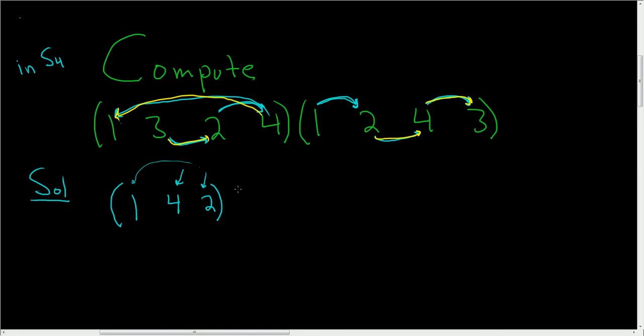And now the only number left is 3, so 3. 3 goes to 1, but then 1 goes back to 3, so 3 goes to 3. So this one's fixed, so we can actually omit this from our answer. This is 1, 4, 2, and that's it.